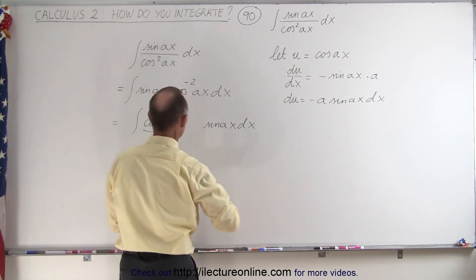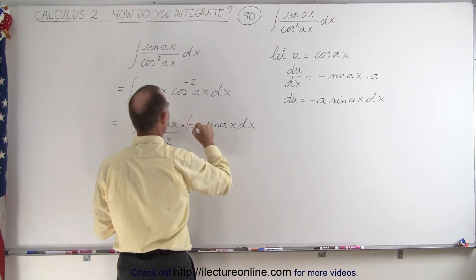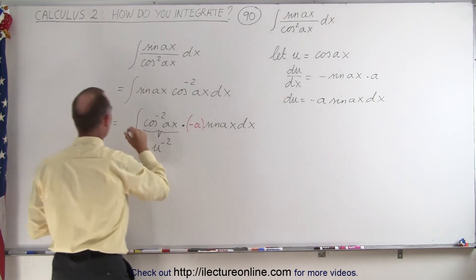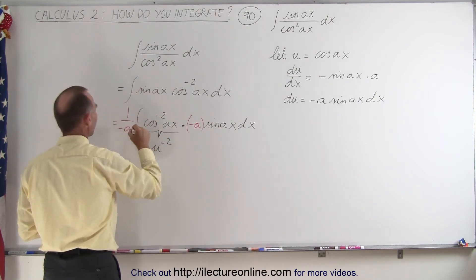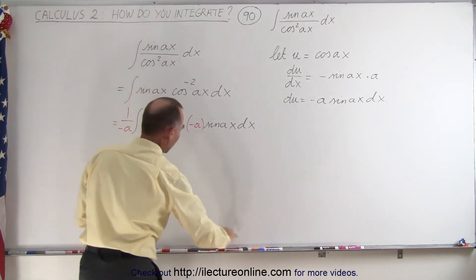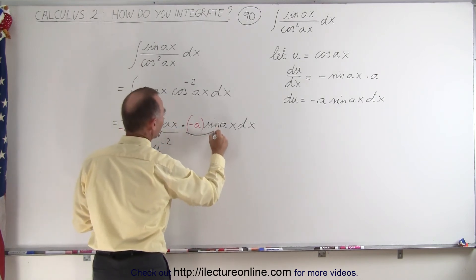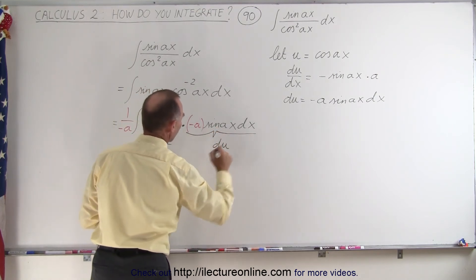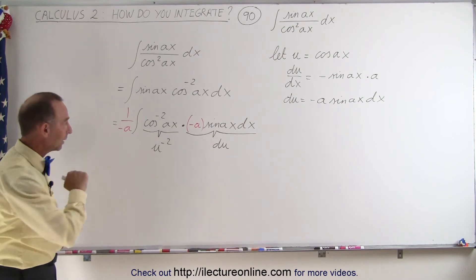So what we're going to do is multiply this times the minus a, and of course when we do that, we also have to divide by a minus a like this. And then what we have over here is the exact differential du. So now we can take that integral and write it in this form.